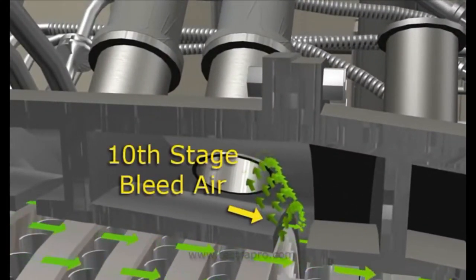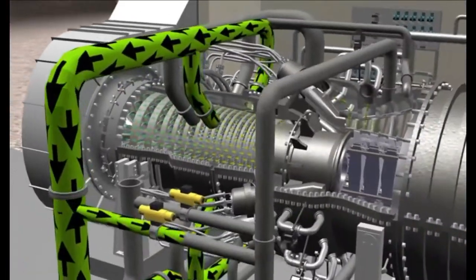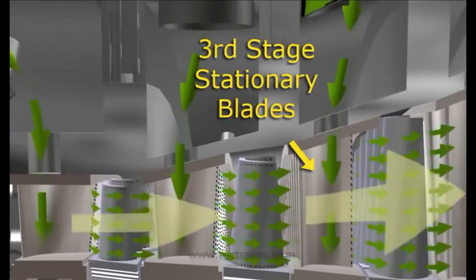The third stage stationary vanes are cooled from bleed air taken from the tenth stage of compressor bleed air. Cooling air leaves the third stage vanes through the trailing edge.